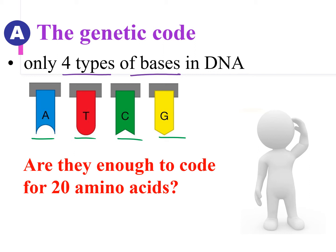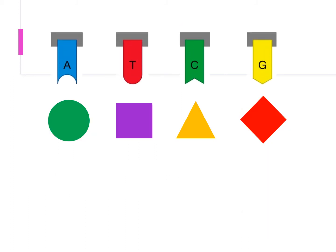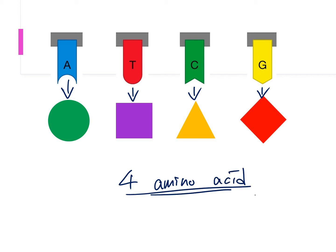But are four types of nitrogenous bases enough to code for 20 amino acids in our body? Of course not. If we have four types of nitrogenous bases — A, T, C, and G — and each of them only coded for one amino acid, overall you would only have four amino acids. This is not enough, because in your body you need to code for 20 amino acids. So it is not possible for one nitrogenous base to code for one amino acid.